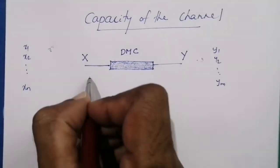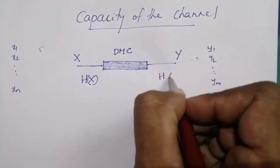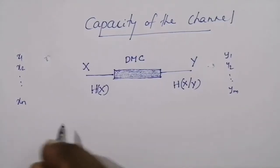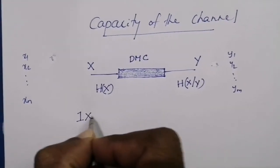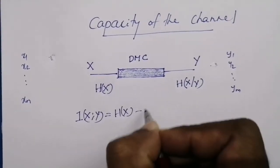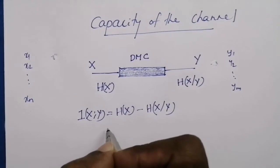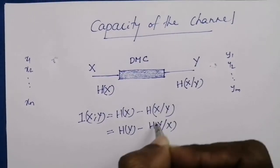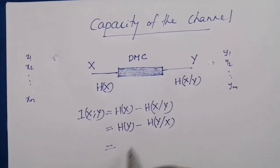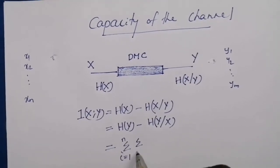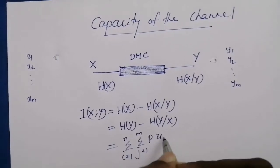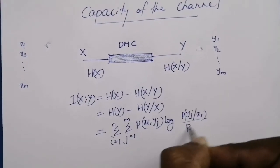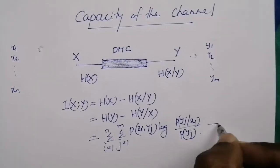Let H be the entropy of the channel input, and H be the entropy of the channel input after observing the channel output y. We know that mutual information is given by I equal to H minus H. This can be written as: sigma i=1 to n, sigma j=1 to m, p(xi, yj) log [p(yj|xi) / p(yj)]. So this is equation number 1.